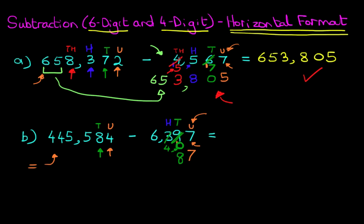Moving on to the hundreds. We have 4 hundreds. How many hundreds do we need to get to? We need to get to 5 hundreds. So what number added to the 4 is going to give us 5? The answer is 1. That was nice and easy.